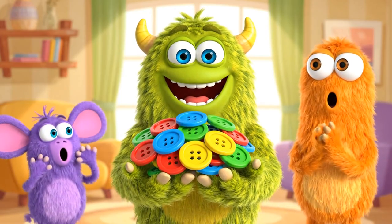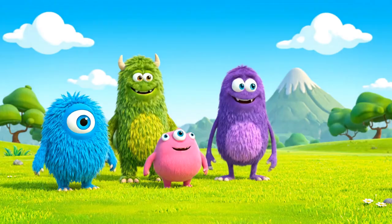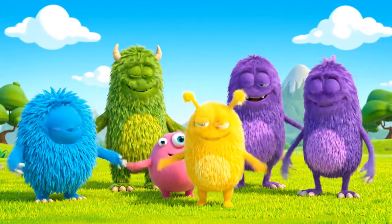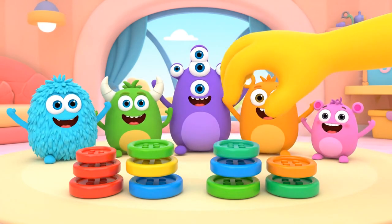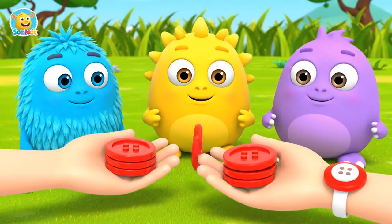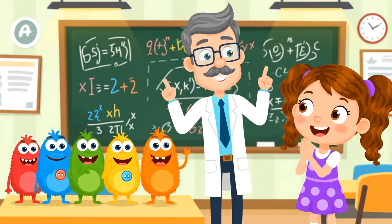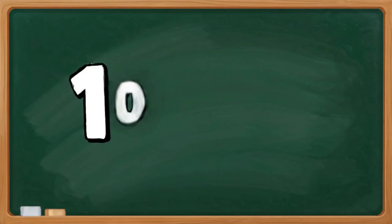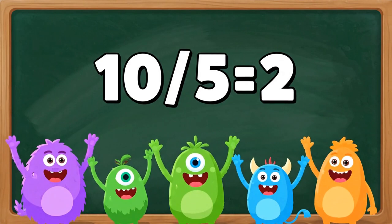Oh my goodness, a super big pile. Ten bouncy buttons — what a wonderful style. And one more new monster, now happy and bright. Five friends need buttons with all of their might. One for you, one for you, one for each friend. Let's share them right till the very end. One more for you, and for you, and for you. Our sharing is fair, it's honest and true. Each monster has two — you're so smart, it's true. Ten divided by five makes two, for me and for you. Ten buttons divided by five, so neat, means two for each monster — a wonderful treat.